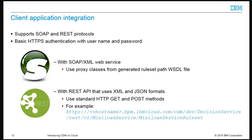IBM ODM on Cloud supports integration with remote servers. It supports calls over HTTPS that use the SOAP and REST protocols with XML and JSON formats. Basic authentication over HTTPS is used to authenticate every API call. As for any SOAP web service, you invoke a SOAP-based decision service from a client application through proxy classes, which can be generated from the Web Services Description Language file provided for the service. The client application can also call the decision service through the REST API using the standard HTTP GET and POST methods.